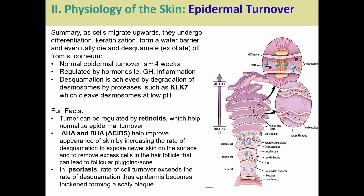Sometimes we can use topicals to regulate turnover. Retinoids — like retinol — can be given as a cream to help normalize epidermal turnover so the skin refreshes itself. We can also increase the rate of desquamation through AHA and BHA acids — alpha hydroxy acids and beta hydroxy acids — which are common in skincare products to remove dead skin cells and reveal newer skin underneath. This helps people whose dead cells get stuck in pores and hair follicles, which can lead to acne.